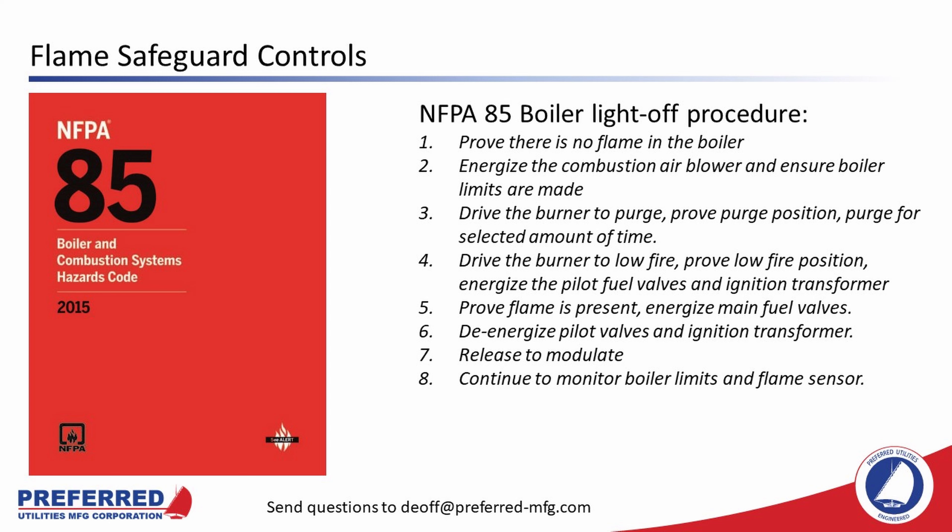The NFPA boiler light-off procedure is as follows. First, you prove that there is no flame in the boiler using an input from the flame scanner. Second, you energize the combustion air blower and ensure boiler limits are made. Then the flame safeguard controller drives the burner to purge, proves purge position with either a limit switch or feedback pots, and then purges for the selected amount of time — usually five air volume changes, sometimes as many as eight to ten depending on the type of boiler.